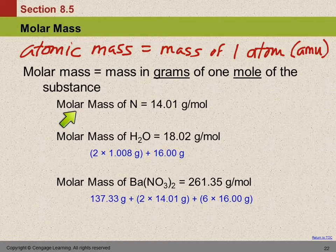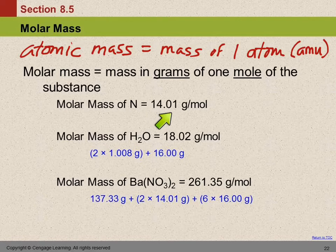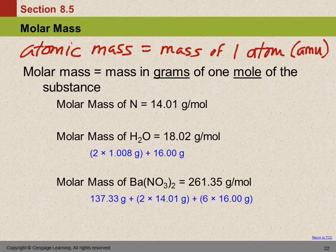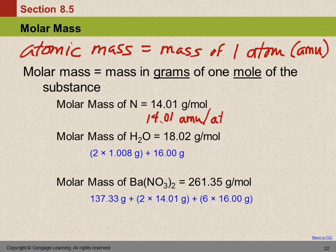If we look at the molar mass of nitrogen, this number is on the periodic table. Under nitrogen it says 14.01, but no unit is given. If we use the unit grams, it's the mass of one mole. If we use atomic mass units, it's that many atomic mass units per atom. We're not going to use atomic mass units much anymore — we're just going to use grams and moles.